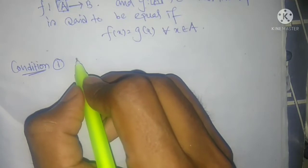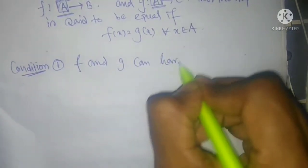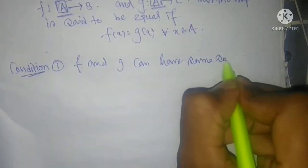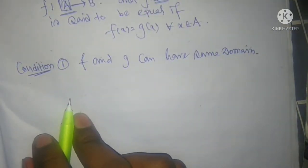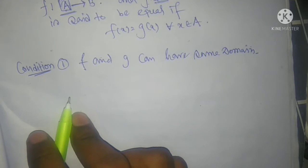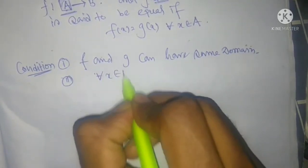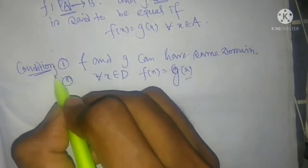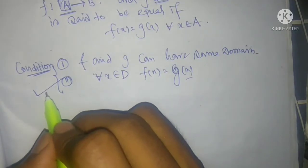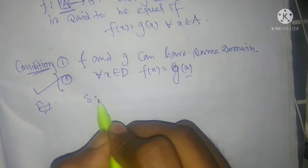For two mappings to be equal, two conditions must hold. Condition one: f and g must have the same domain. If they don't have the same domain, we cannot say the maps are equal. Condition two: f(x) = g(x) for all x belonging to the domain. When both properties hold, we say the two maps are equal.